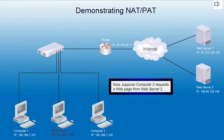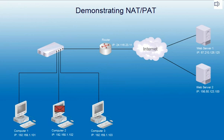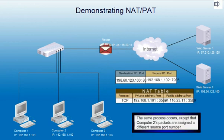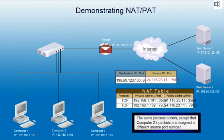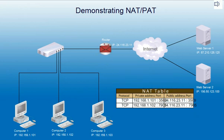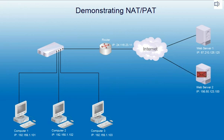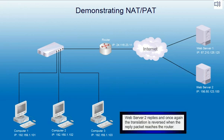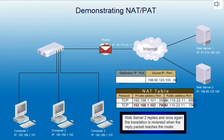Now, suppose Computer 2 requests a web page from Web Server 2. The same process occurs except that Computer 2's packets are assigned a different source port number. Web Server 2 replies and once again the translation is reversed when the reply packet reaches the router.